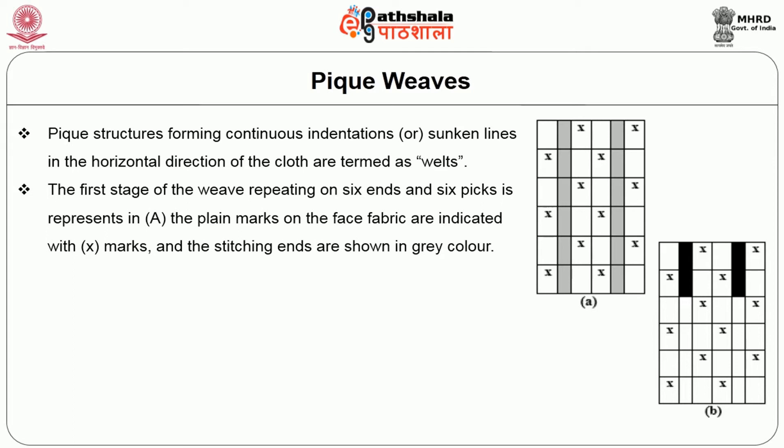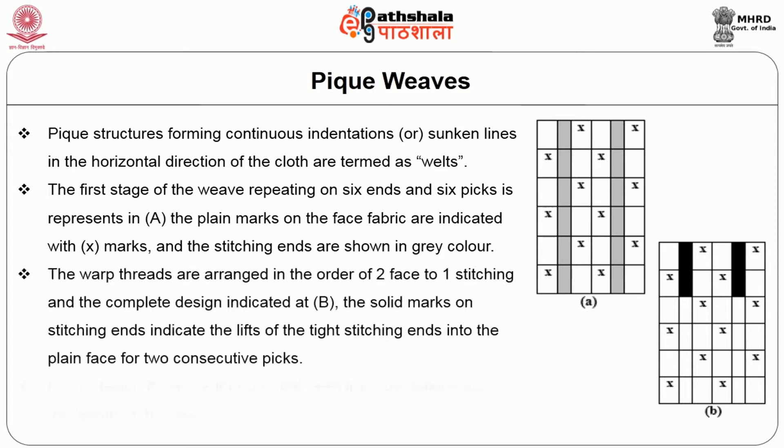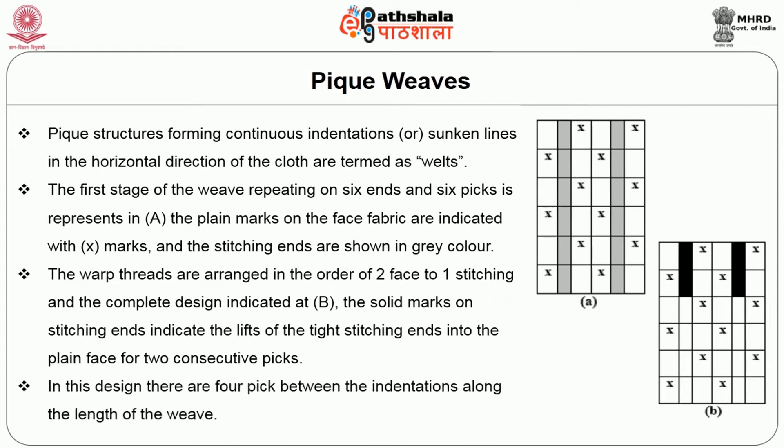The solid marks and the stitching ends are shown in grey. The warp threads are arranged in the order of 2 face to 1 stitching, and the complete design is indicated at B. The solid marks on stitching ends indicate the lifts of the tight stitching ends into the plain face for 2 consecutive picks. In this design there are four picks between the indentations along the length. The grey marks represent the tight stitching warp, while the other ends are the plain warp ends, with stitching ends lifted along the face warp ends for two picks in this PK structure.